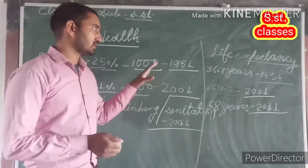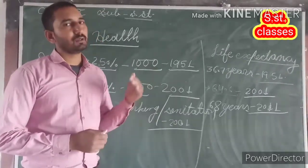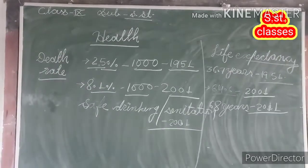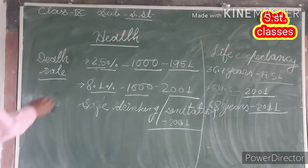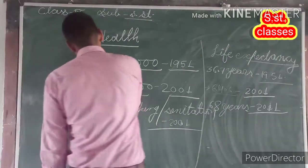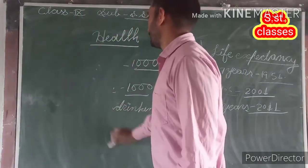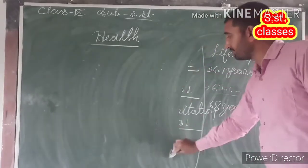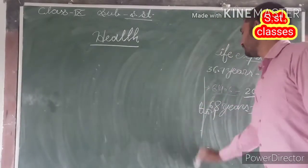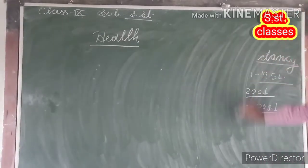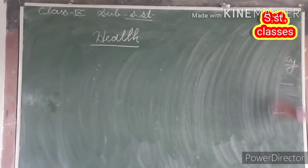Now the next point we are going to discuss is related with adolescents. Adolescents are the most important part of a population. In India, nearby one-fifth part of the total population is adolescent. This is a very important part of the population.